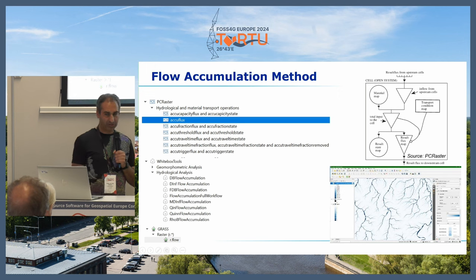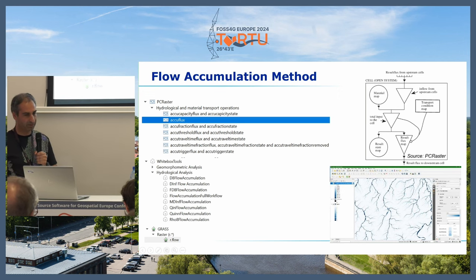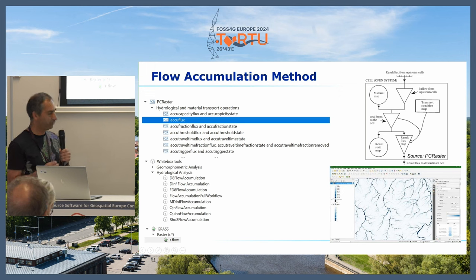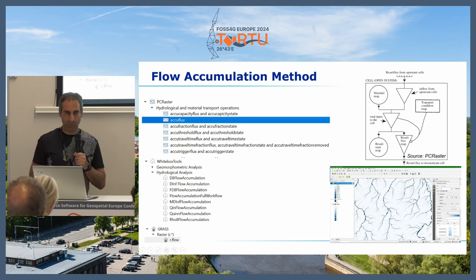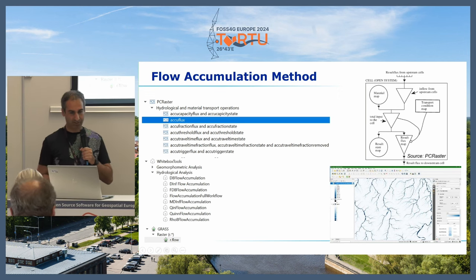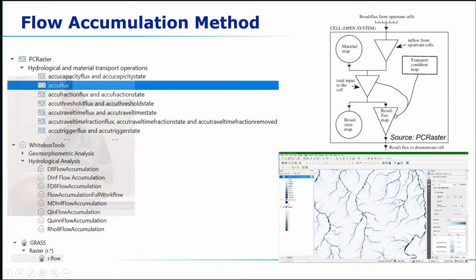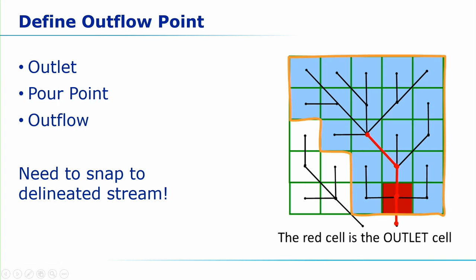Flow accumulation works differently — it's a more continuous approach. We accumulate water over the network, assuming every cell has one unit, and use the flow direction to accumulate water across the network. You end up with a map showing accumulation values, and then you determine what minimum accumulation you consider as a river, and delineate your river from the raster. I find Strahler order more intuitive, but both methods need calibration.